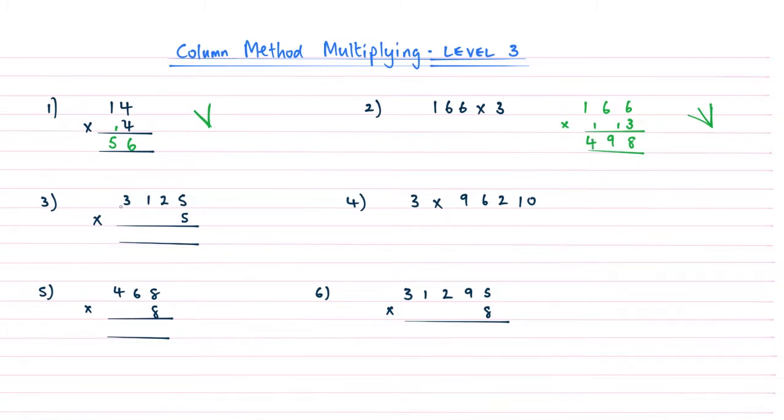Moving on to question 3, this one's already set up for us, which is nice. So 5 times 5 is 25, so in this case we've got to carry the 5. 2 times 5 is 10, carry the 2 gives me an answer of 12, remembering to carry the 1 and write it underneath the 100s column.